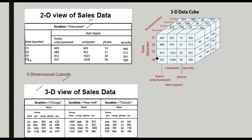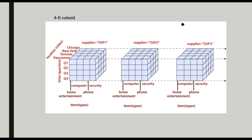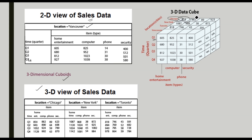This example shows a data cube with items like home, computer, phone, and security arranged by quarter (Q1, Q2, Q3, Q4) and by location. For instance, the number 5854 represents the sale of the product home in quarter one at the location Chicago. That is how we read a 3D data cube.